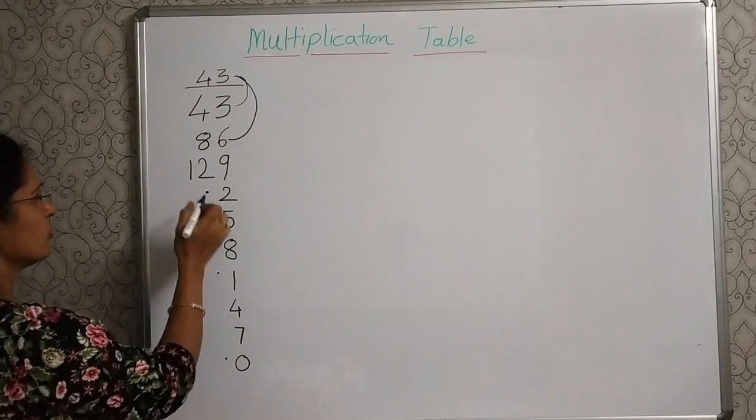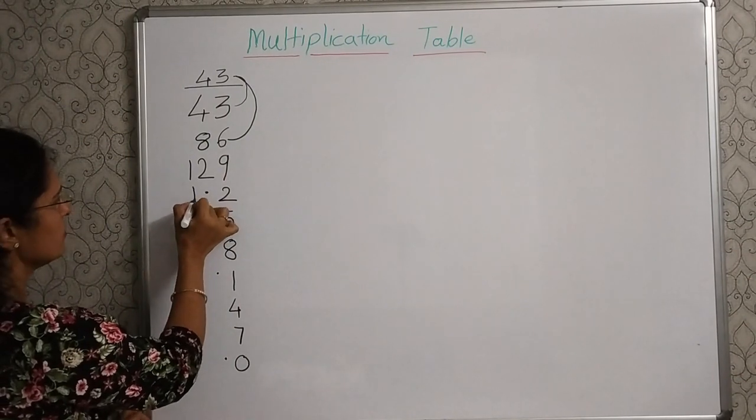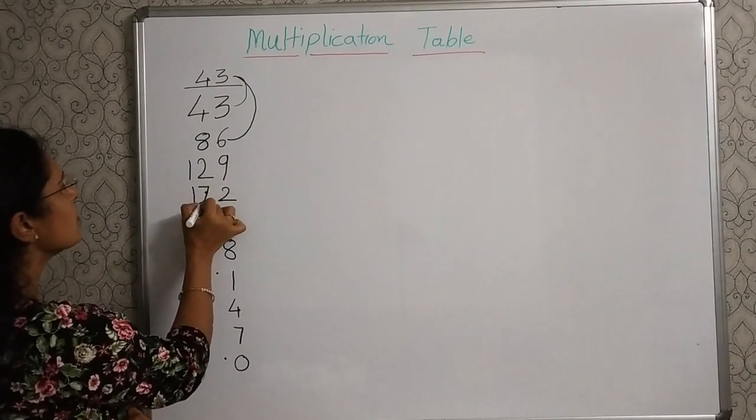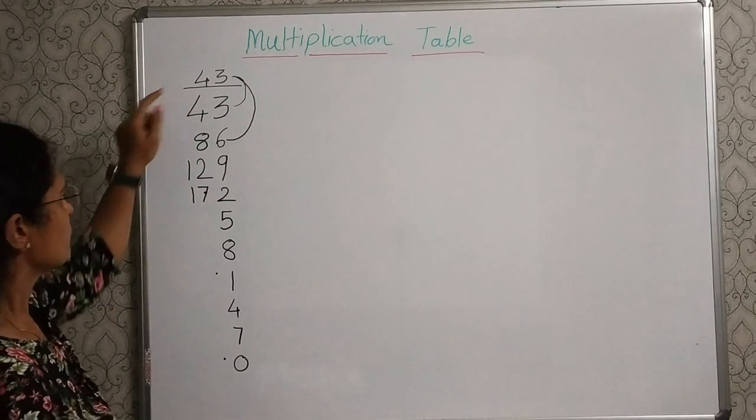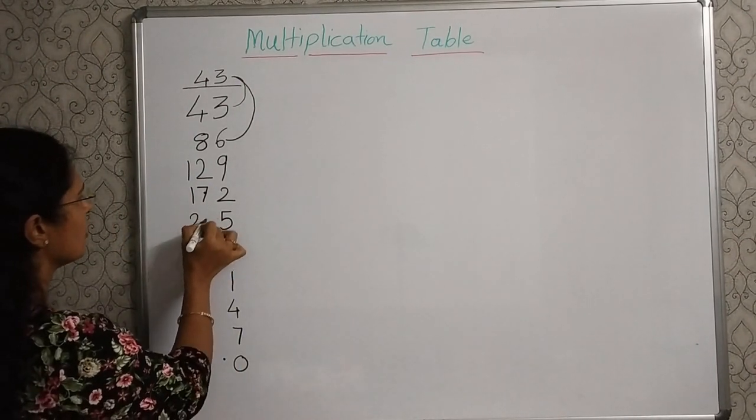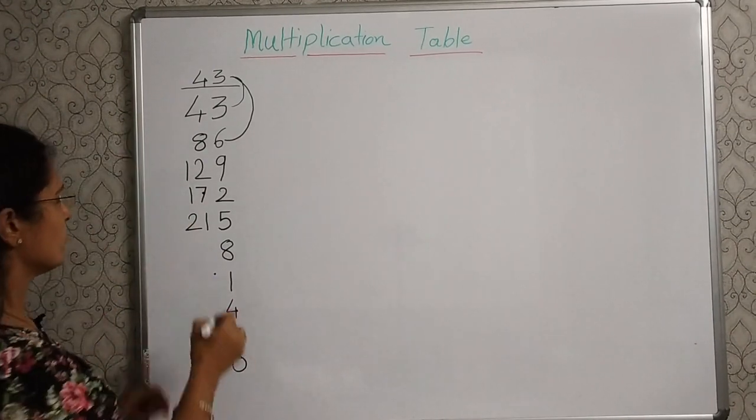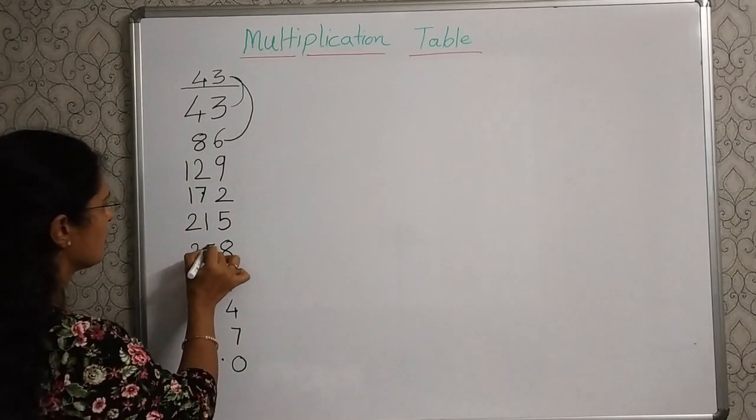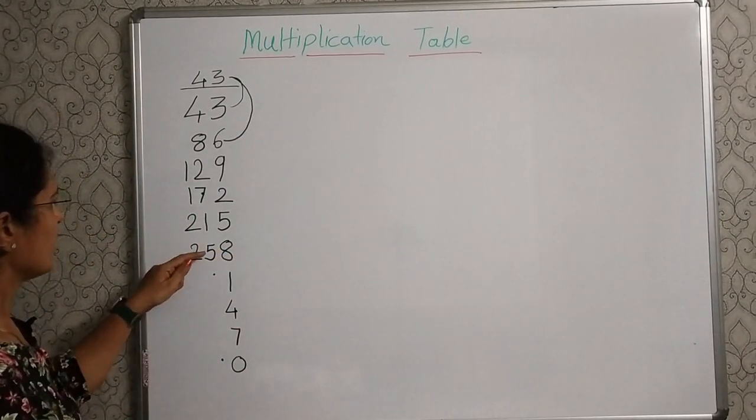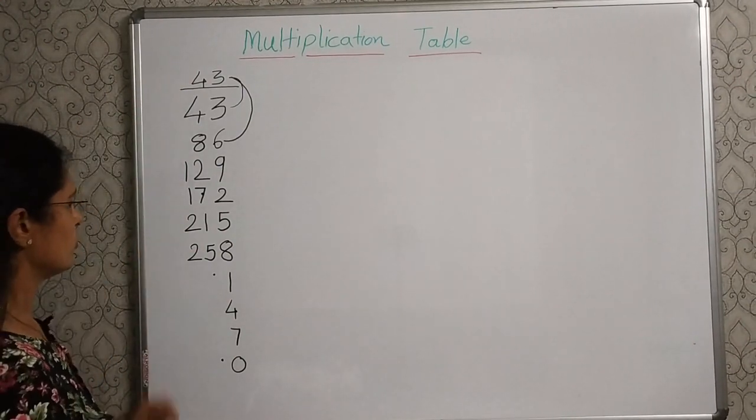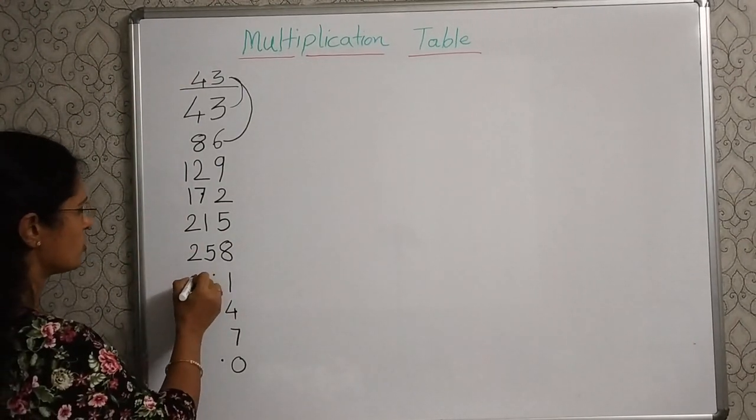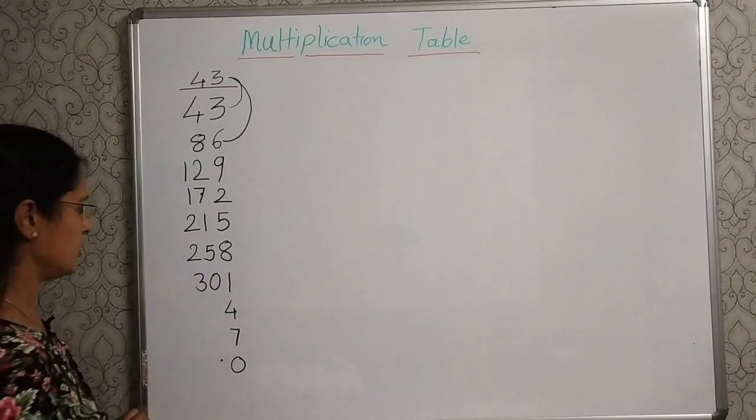Now, 12 plus 4, 16 plus 1, 17. 17 plus 4, 21. 21 plus 4, 25. 25 plus 4, 29. And this dot, it will be 30.